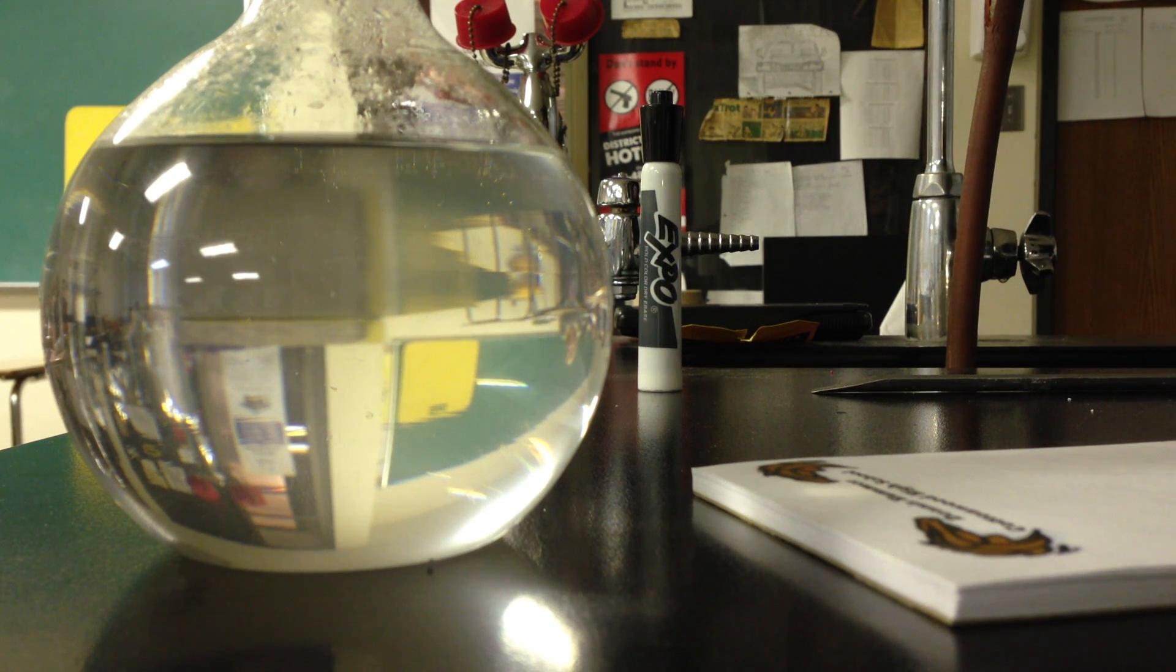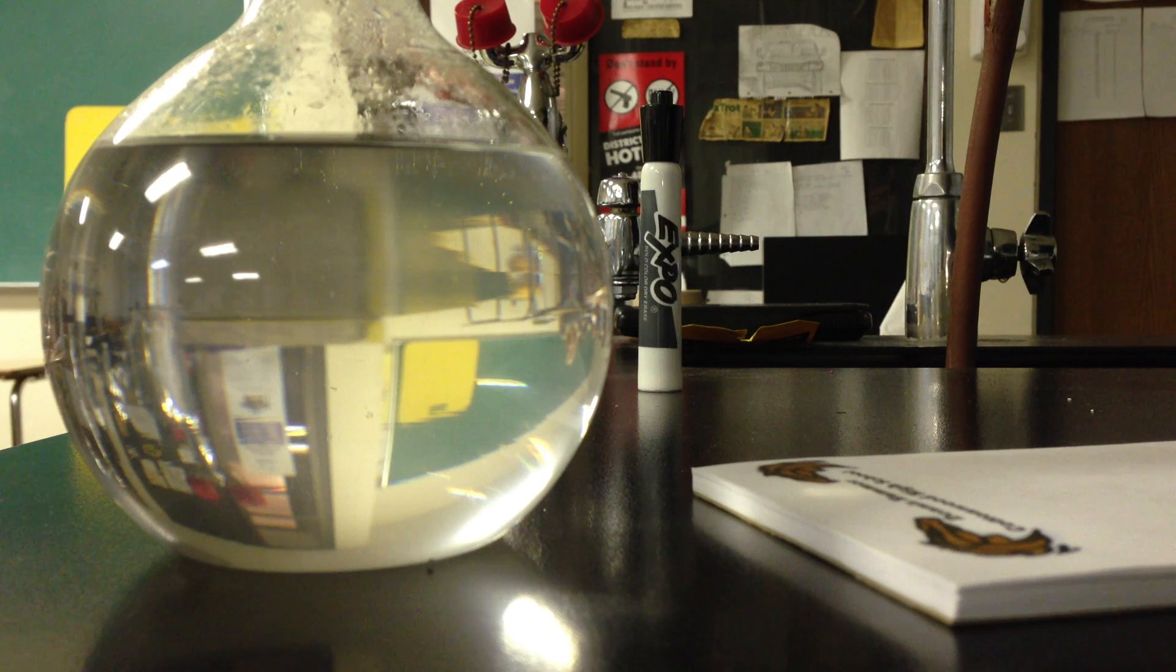So this is a supersaturated solution of sodium acetate. I made it this morning for you guys. What I did is I took about 600 or 700 grams of sodium acetate and I put it in the bottom of this flask and I added 25 milliliters of water and it wouldn't dissolve.